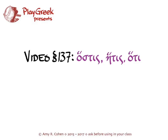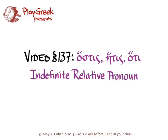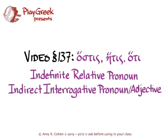Section 137 of Hansen and Quinn's Greek Intensive Course is about ὅστις, ἥτις, ὅ τι, which is both the indefinite relative pronoun and the indirect interrogative pronoun or adjective. Hansen and Quinn covers this on page 524.